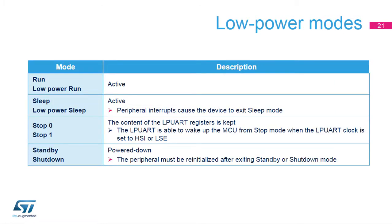The LPUART peripheral is active in run, sleep, and low power modes. LPUART interrupts cause the device to exit sleep and low power sleep modes. The LPUART is able to wake up the MCU from stop 0 and stop 1 modes when the LPUART clock is set to HSI or LSE. USART reception is functional in stop mode and generates a wake-up interrupt on start, address match, or received frame events. In standby and shutdown modes, the peripheral is powered down and must be re-initialised after exiting those modes.